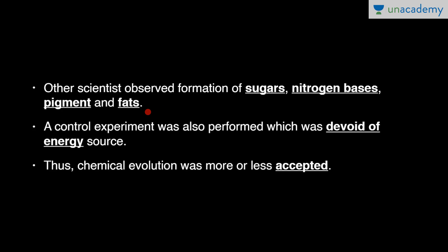A control experiment was also performed which was devoid of an energy source. In the actual experiment, electric discharge at 75,000 volts was used for energy, but in the control experiment no energy source was provided. Based on Miller and Urey's experiment, chemical evolution was more or less accepted.